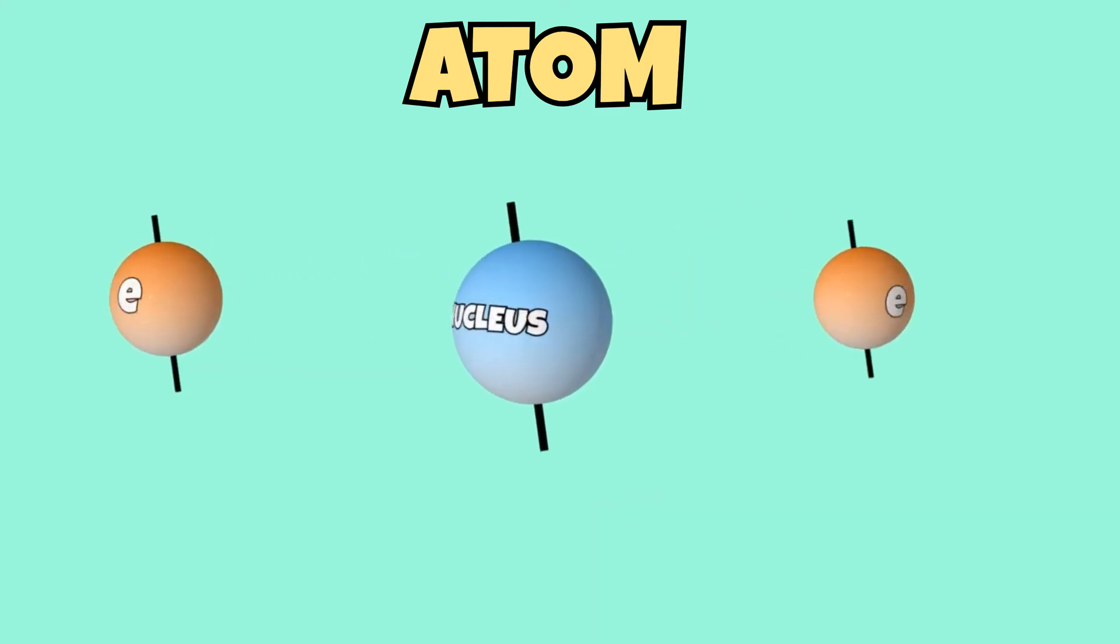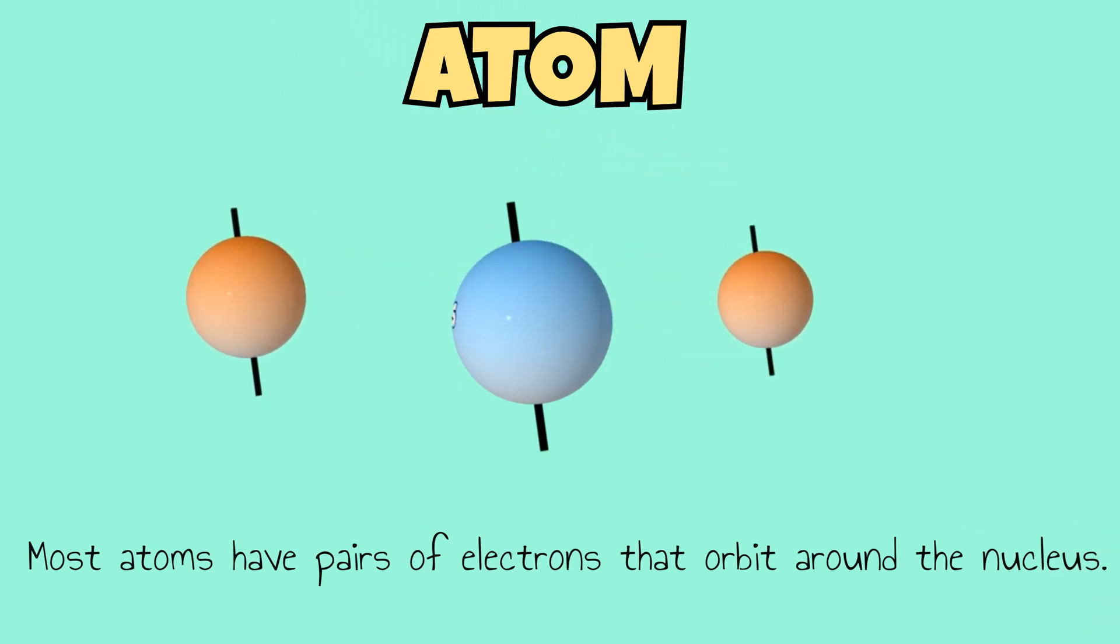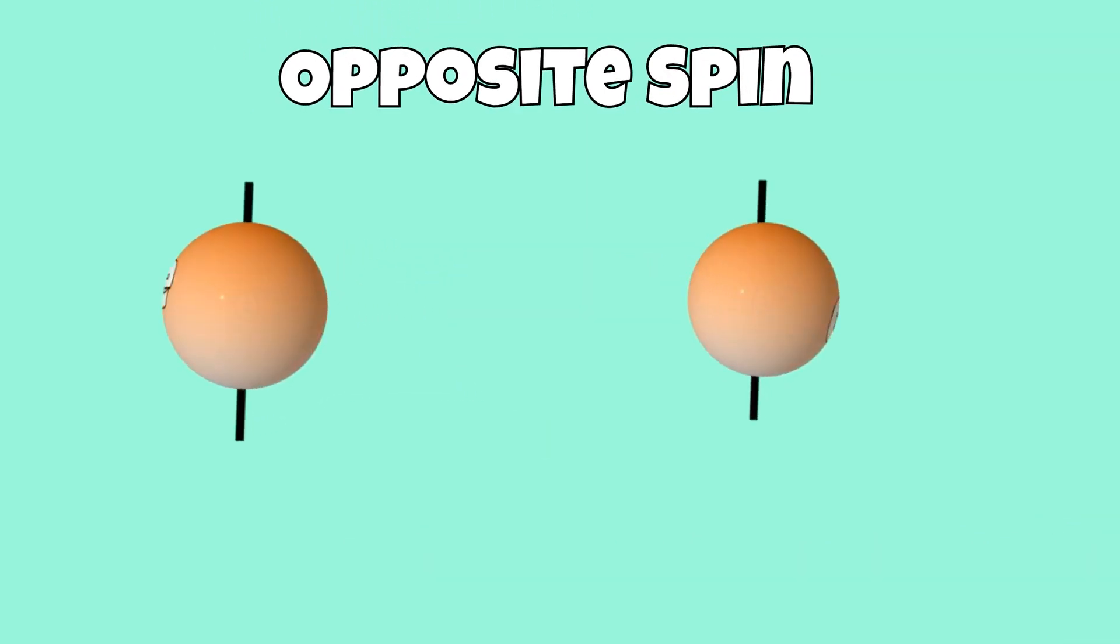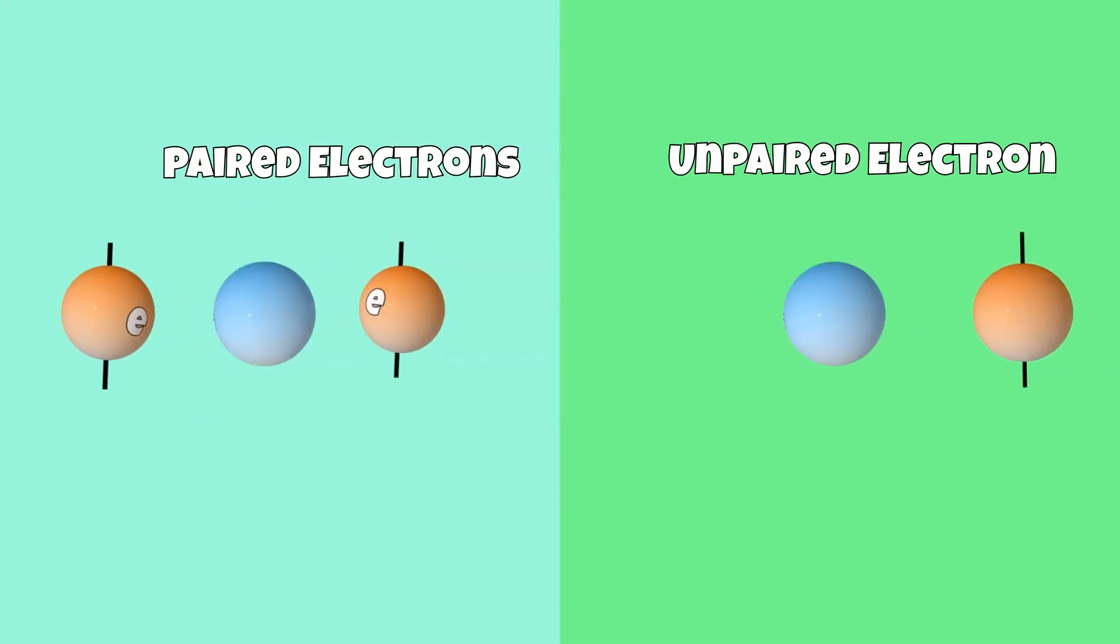Most atoms have two pairs of electrons that are orbiting around the nucleus. Since they have an opposite spin, they produce no magnetic field. However, some atoms have an unpaired electron that is orbiting around the nucleus that creates a magnetic field.